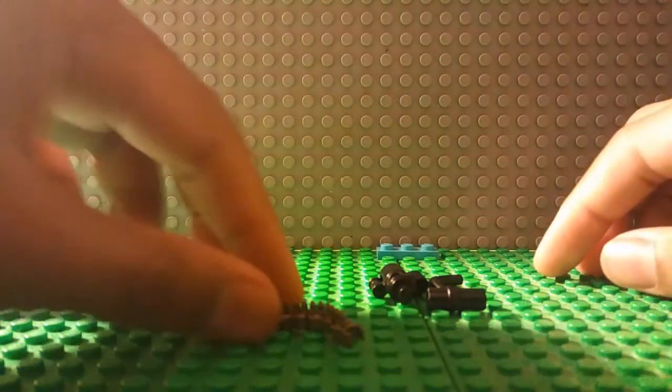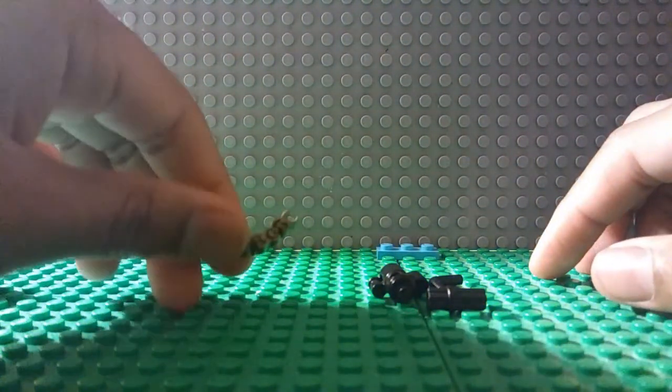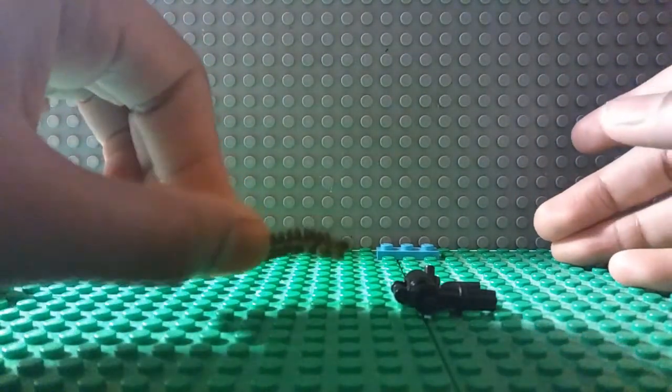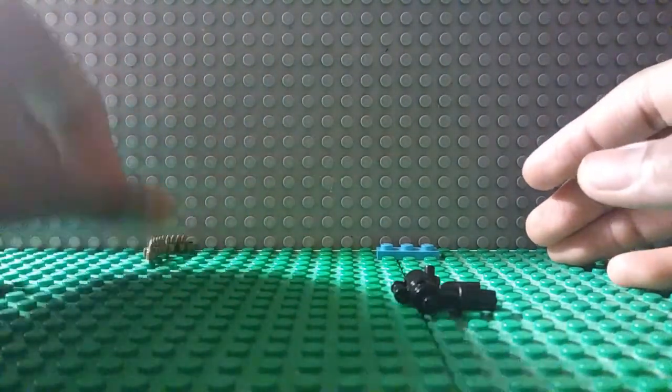First, we have two parts of the Minigun. We have the Minigun itself and the Minigun's bullet chain. We're going to be starting with the Minigun itself.